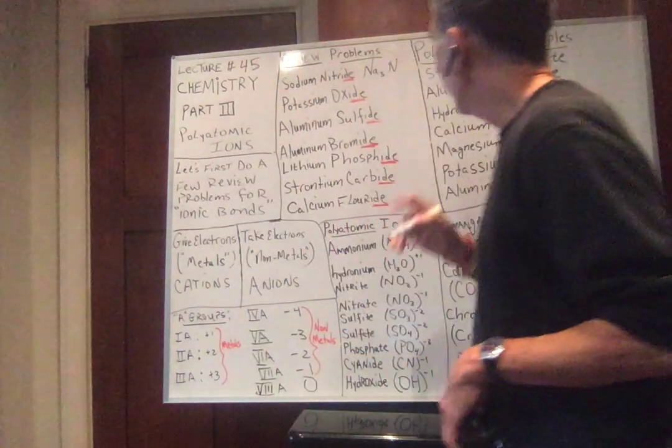Notice that your periodic table is your best friend here. Aluminum bromide — aluminum wants to be plus three. Bromine is in group 7, the halogens, and so it needs only one electron. Aluminum is giving three; bromine only needs one. So one aluminum gives three, meaning it takes three bromines to make one aluminum happy. The formula for aluminum bromide is AlBr₃.